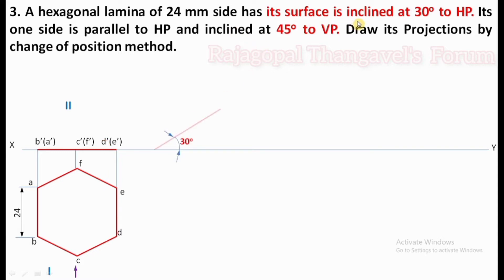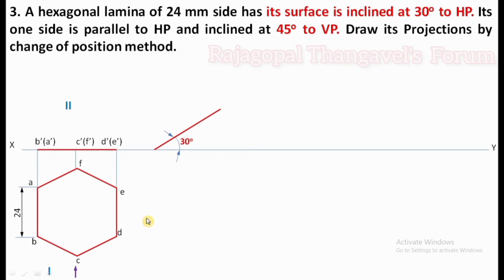Now the next one is surface inclination. Whenever inclined to both the planes, you have to take surface inclination in step number three. Remember: wherever the surface appears as a line in any view, that view must be tilted. Here the front view is the line showing the surface, so it has to be tilted 30 degrees with respect to HP. Measure the same distance from B'A' to D'E', reproduce the same length for inclination of 30 degrees, and keep one side — either B'A' or D'E' — on the XY line. We are keeping B'A' on XY, and we can mark C'F' and finally D'E'. This is step number three.